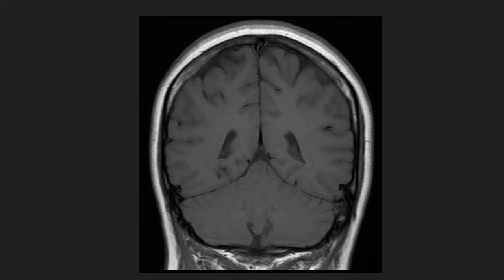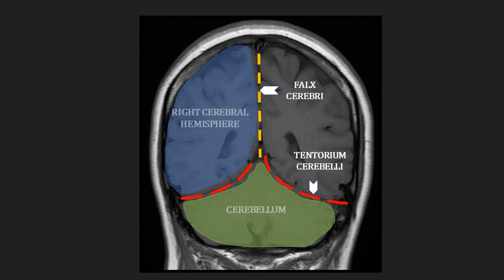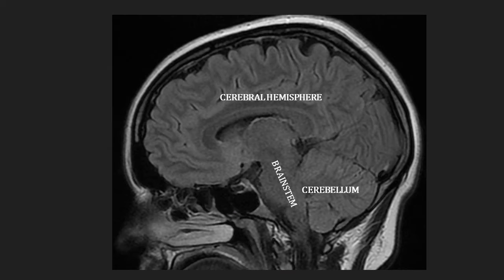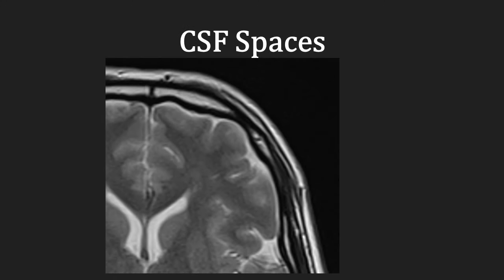Again, in the coronal plane, the orange dashed line represents the falx cerebri, separating the right cerebral hemisphere from the left. The red dashed line represents the tentorium cerebelli, separating the cerebral hemispheres from the cerebellum, highlighted here in green. In the sagittal plane, the falx cerebri is not seen, but you can still see the cerebral hemisphere in blue, the brain stem in purple, and the cerebellum in green. The brain is surrounded by CSF in the sulci, fissures, basal cisterns, and centrally within the ventricles.